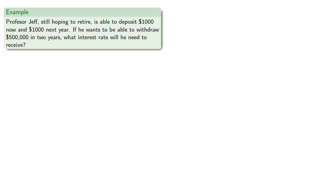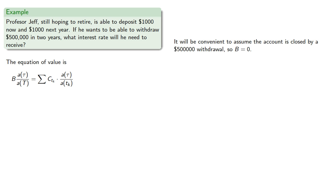We can write our equation of value. It will be convenient to assume the account is closed by a $500,000 withdrawal at the end, so our final balance is zero. We have deposits of $1,000 at t equals 0 and t equals 1, and we also have a withdrawal of $500,000 at t equals 2.